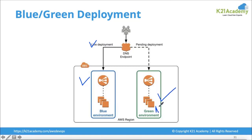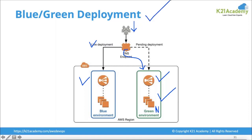Once the green environment is created, tested, and ready to go to production, you perform a DNS or network switch. This switch can happen all at once, on a percentage basis, or on a gradual basis — ensuring that the customer will not face any downtime at any point in time and customer satisfaction is kept high.